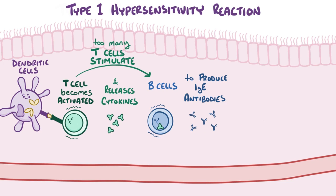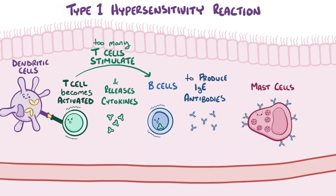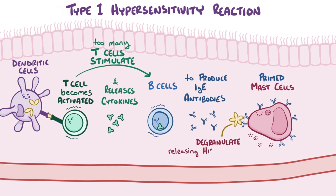Those IgE antibodies get released into the bloodstream and bind to mast cells, which are immune cells in the tissue that carry within themselves a load of histamine. Once bound by IgE, the mast cells are primed, meaning if pollen enters the body again in the future, those mast cells degranulate and release their histamine into the local tissue.